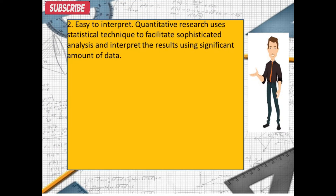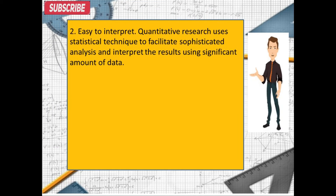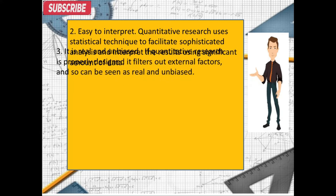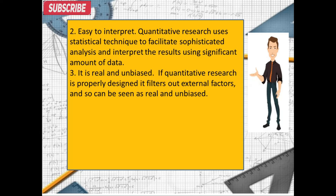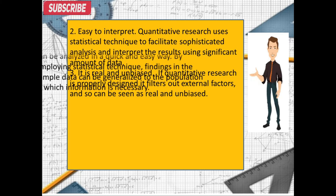2. Easy to interpret. Quantitative research uses statistical techniques to facilitate sophisticated analysis and interpret the results using a significant amount of data. 3. It is real and unbiased. If quantitative research is properly designed, it filters out external factors, and so it can be seen as real and unbiased.